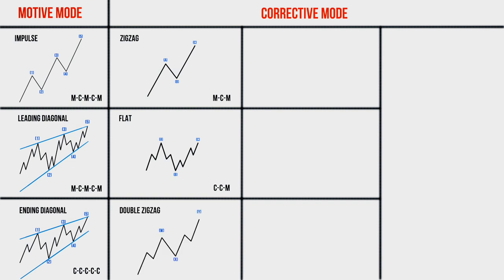Now we will analyze the double zigzag. As the name implies, a double zigzag consists of two zigzags connected by a corrective intervening wave. The double zigzag is denoted by the letters W, X, and Y, and all its parts are formed in the corrective mode. It should be remembered that waves W and Y as a rule take the form of simple zigzags, but sometimes these waves themselves can be double or triple zigzags. The double zigzag is usually a deep correction in relation to the previous trend.